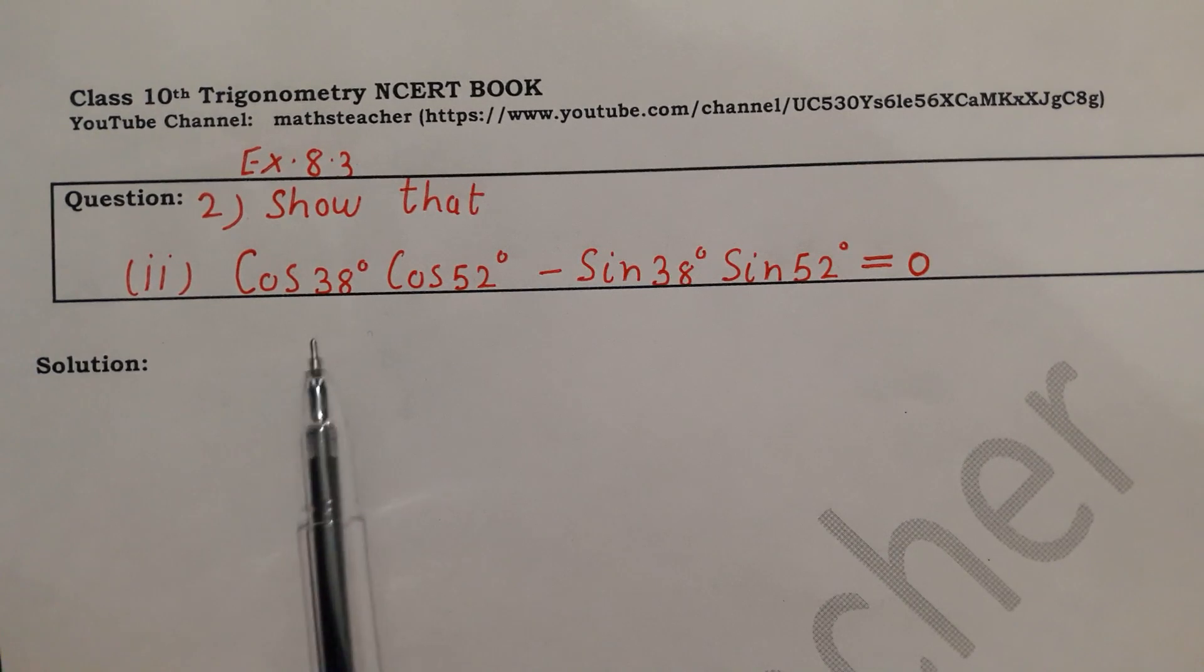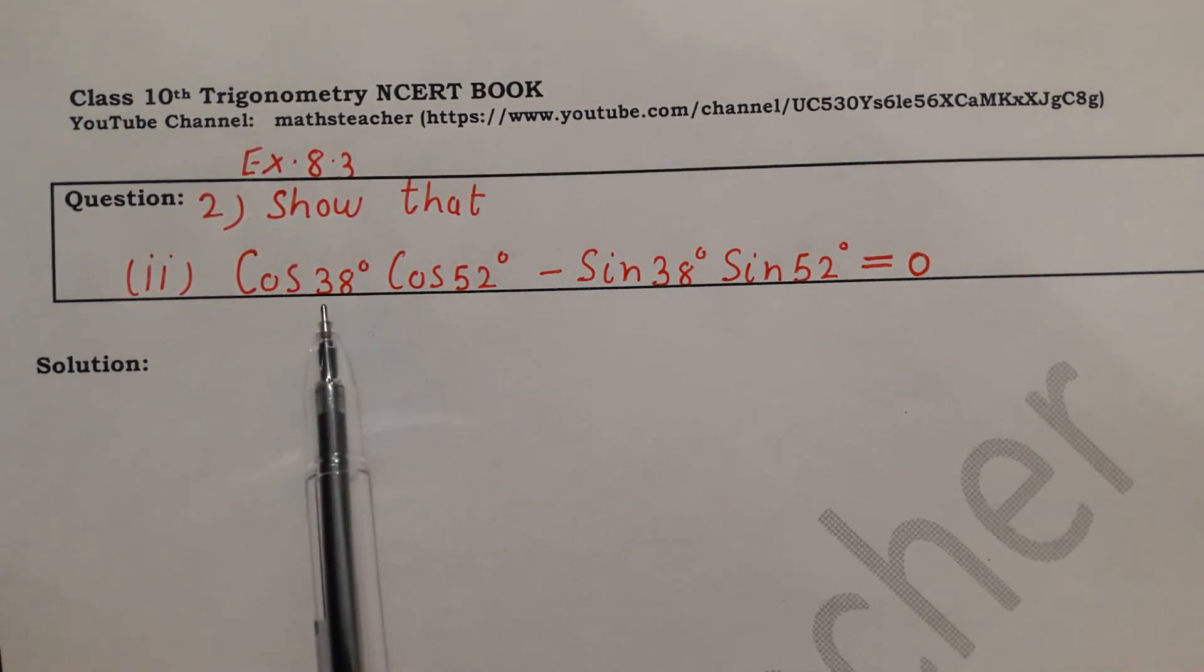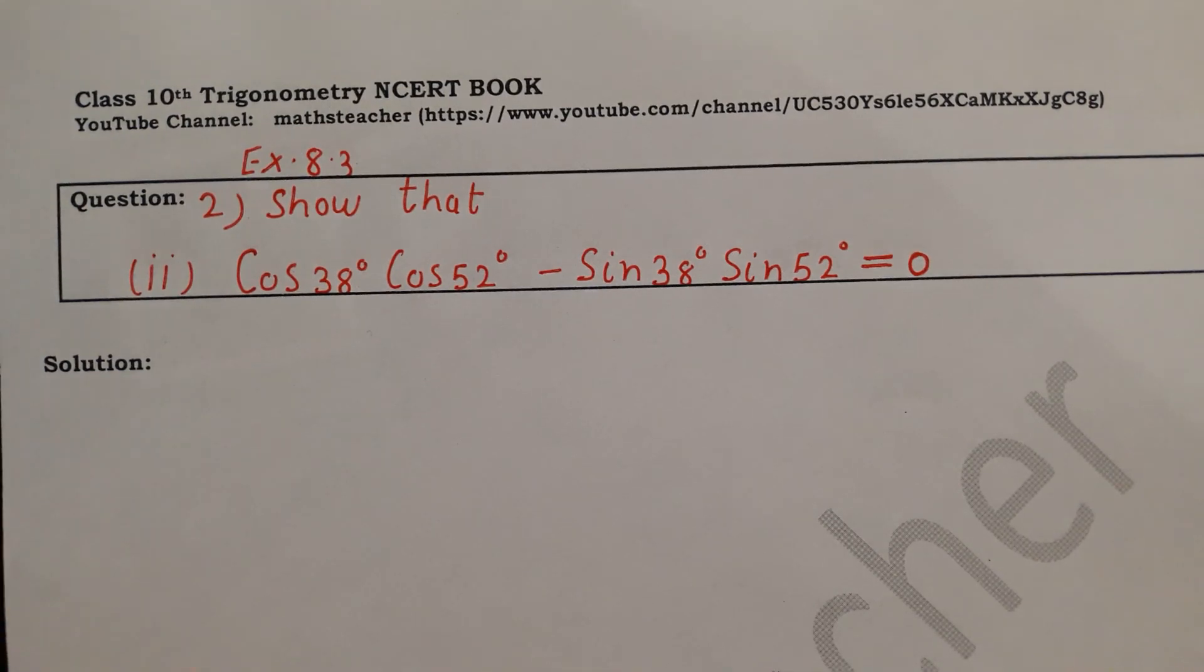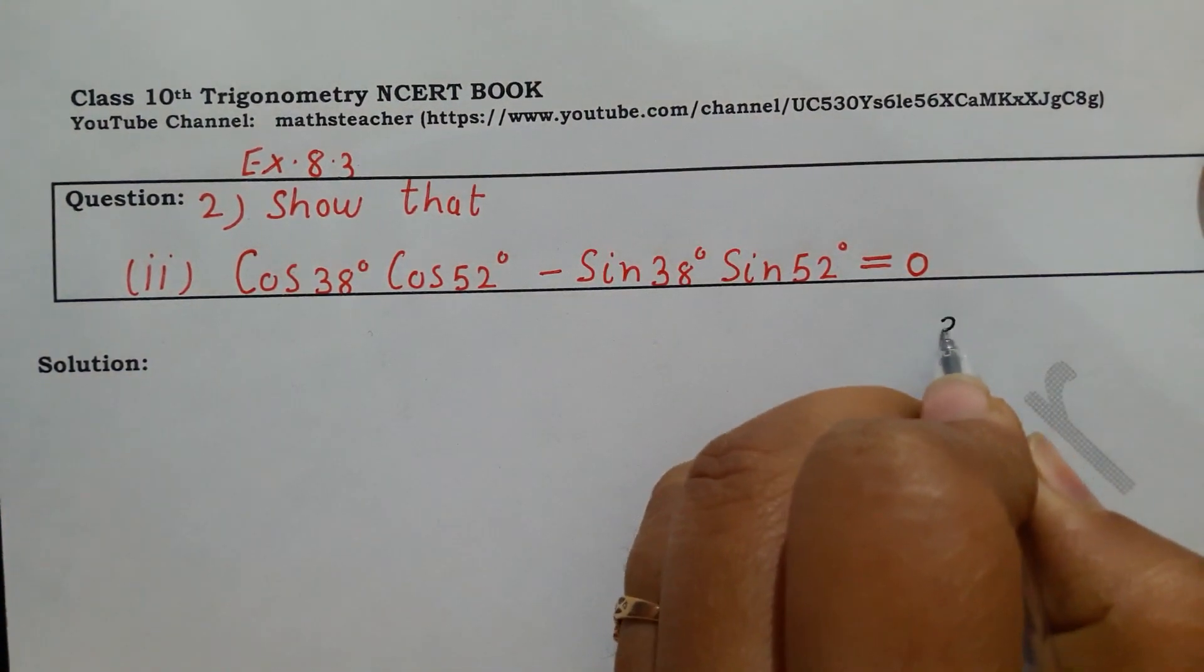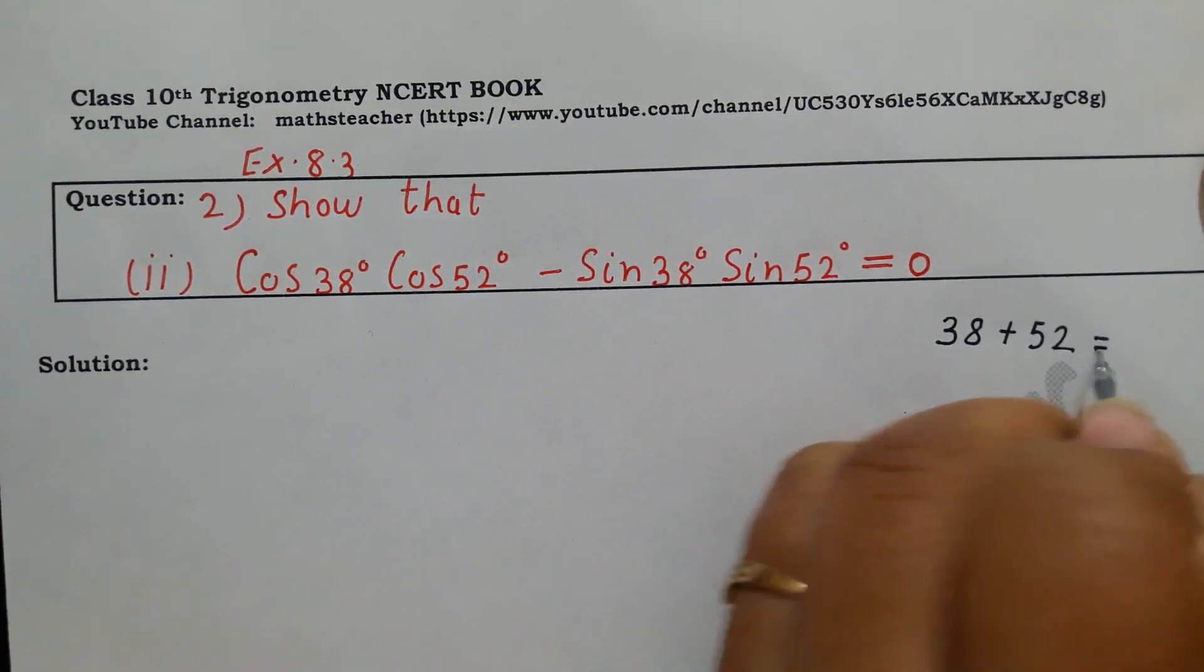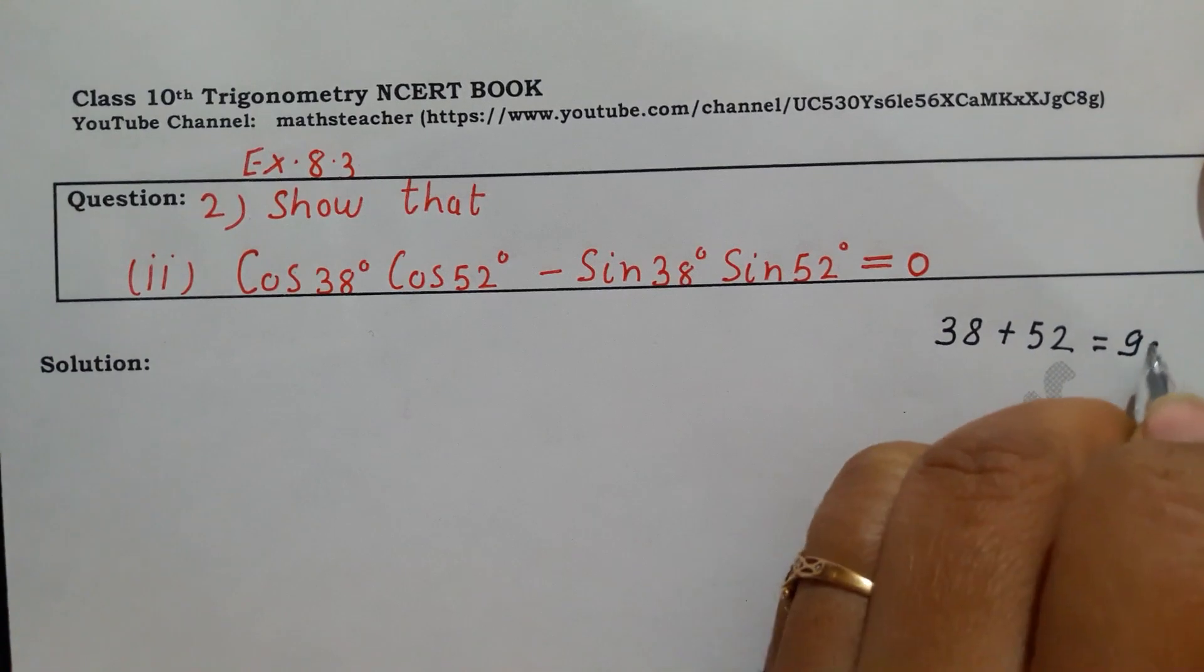So here, what do we see? 38 and 52 degree angles, whose values we don't know. So let's check if this is a complementary angle. 38 plus 52, how much is this? 90 degrees.